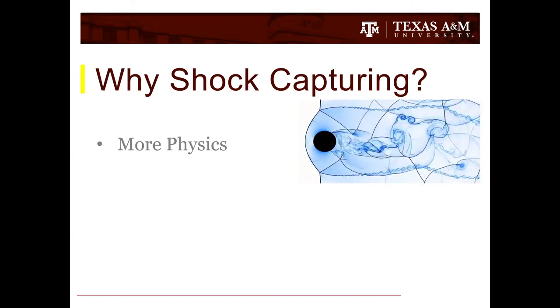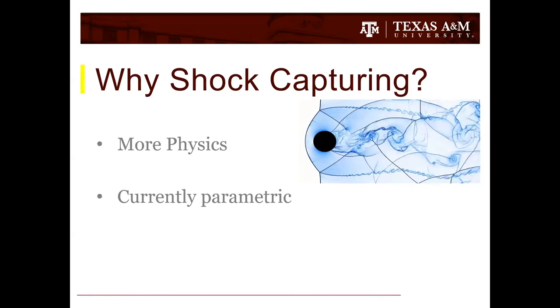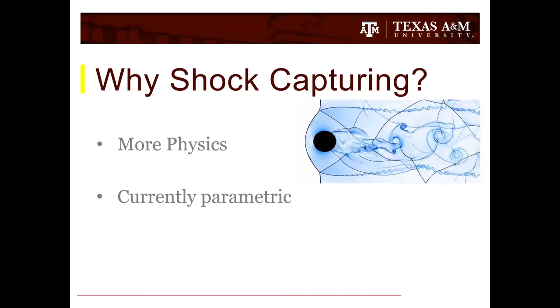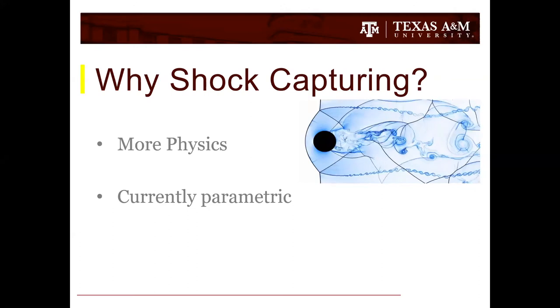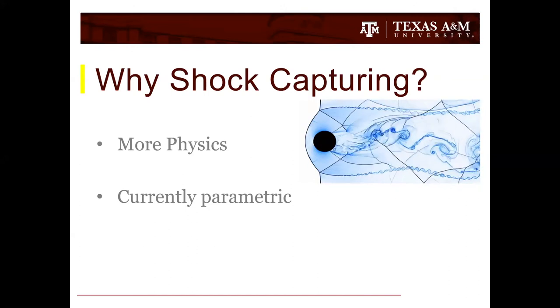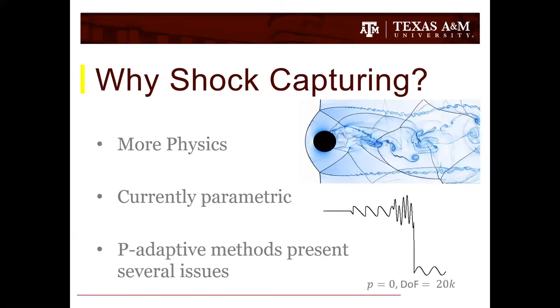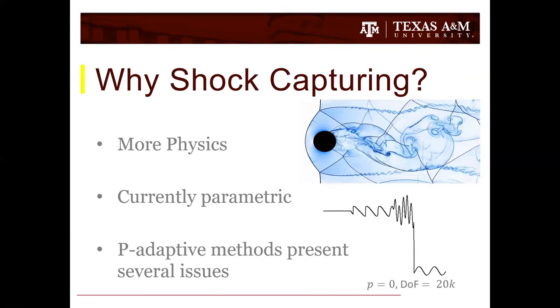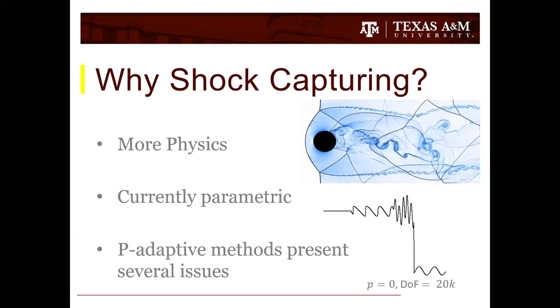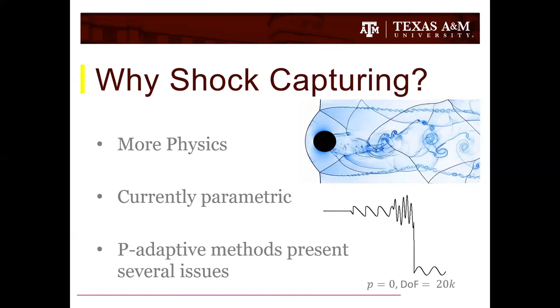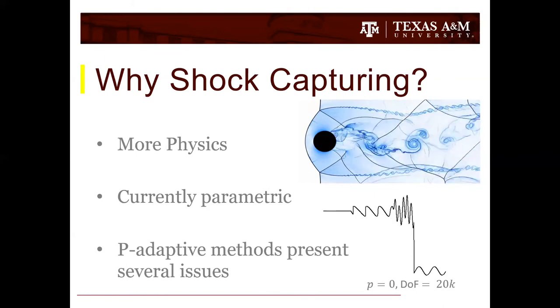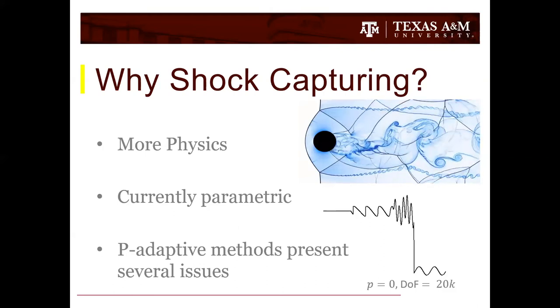What's holding us back is currently our methods are fairly parametric. We've got this AV scheme that does require some degree of tuning for those of you that have used it. Some of you might be thinking we've got all of this p multi-grid capability, could we just do some kind of p adaptation? My take on p adaptation, which I know some people might disagree with, is that p adaptation does present several issues. It would be nice if we had something other than that. Issues like load balancing, and also the fact that just if you start chucking p0 elements into your grid, it's going to get quite expensive. As an example, a very simple 1D case with 20,000 elements.